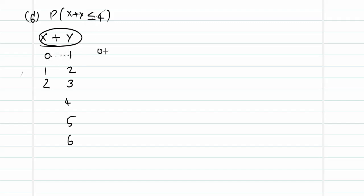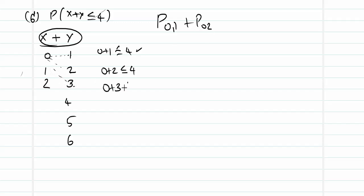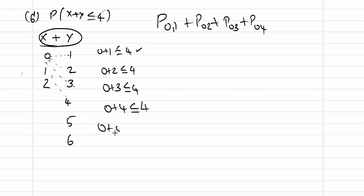For X = 0: 0+1 ≤ 4 ✓, so take pair (0,1); 0+2 ≤ 4 ✓, take (0,2); 0+3 ≤ 4 ✓, take (0,3); 0+4 = 4 ≤ 4 ✓, take (0,4); 0+5 = 5, not ≤ 4, ignore; 0+6, not ≤ 4, ignore.